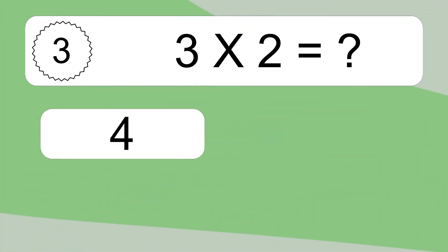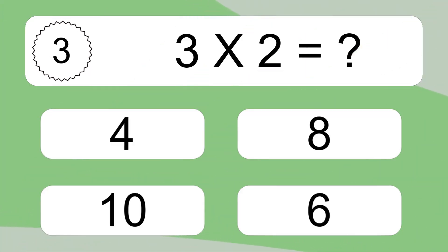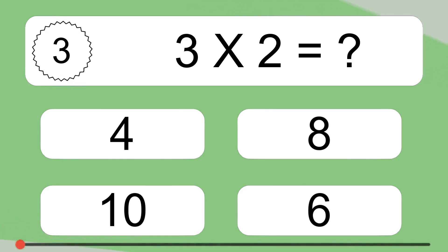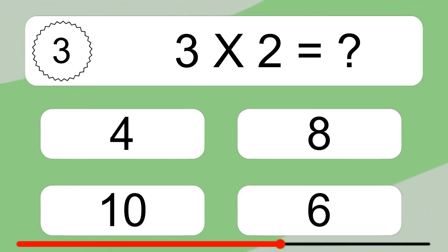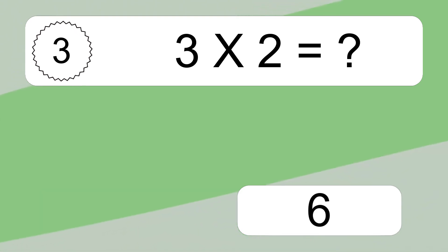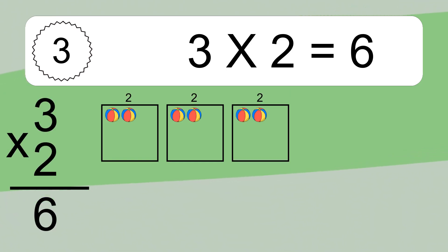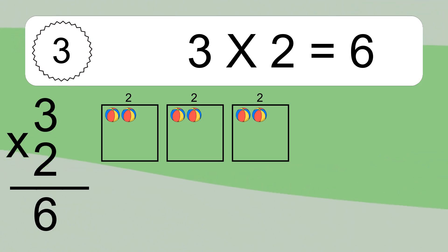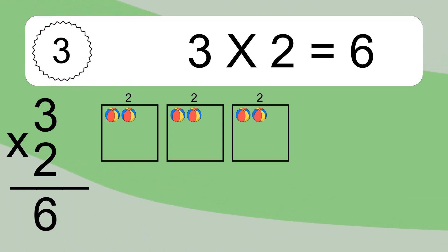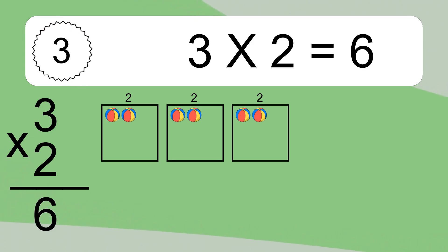3 times 2 equals what? 3 times 2 equals 6. We have 3 boxes and each box has 2 colorful balls inside. If you count all the balls in all the boxes together, you will have 3 times 2 balls. This equals 6 balls.